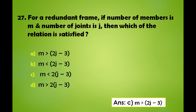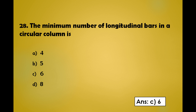For a redundant frame, if number of members is M and number of joints is J, then which of the following relations is satisfied? A) M > 2J-3, B) M < 2J-3, C) M < 2J-3, D) M > 2J-3. The answer is: for a redundant frame, if number of members is M and number of joints is J, then M is greater than 2J-3.